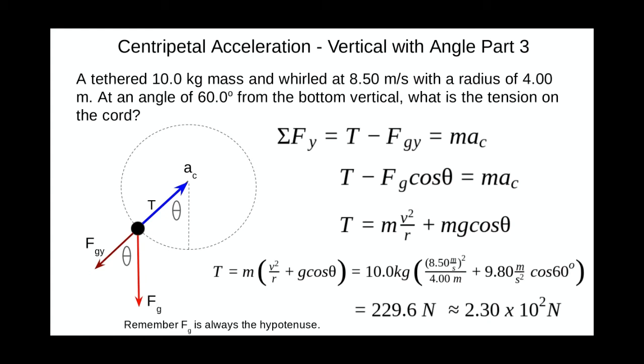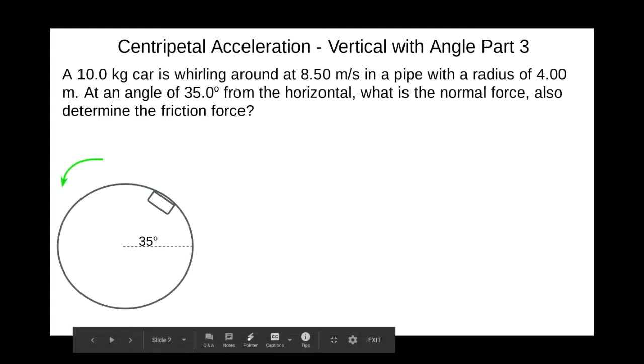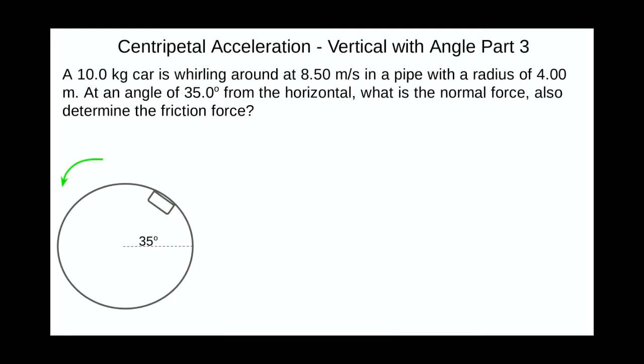Now let's look at something a little different. Now let's put a car whirling around inside that, a pipe with the same diameter. In other words, we have a 10 kilogram car whirling around at 8.5 meters per second in the pipe with a radius of 4 meters. And we're looking at the angle of 35 degrees from the horizontal. What is the normal force? And in order to keep that car on that pipe upside down or semi upside down. So let's take a look at that.